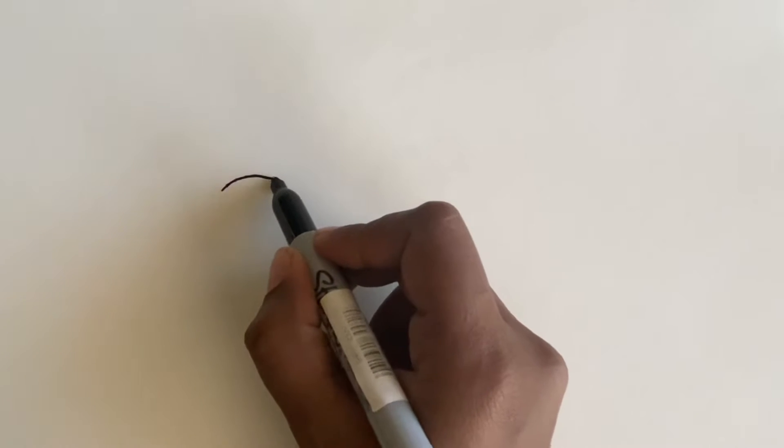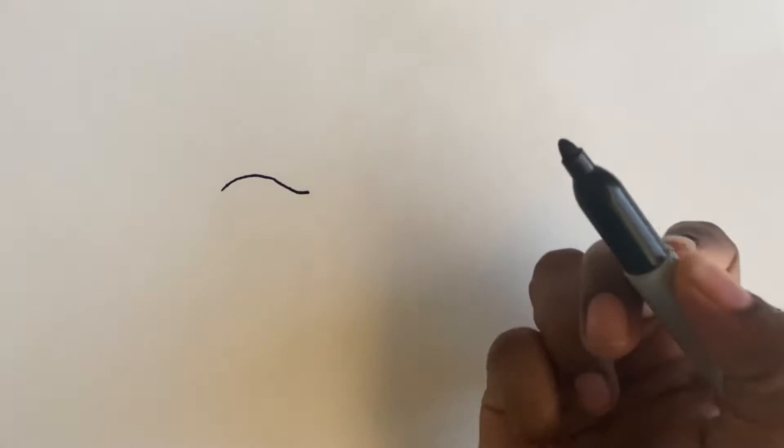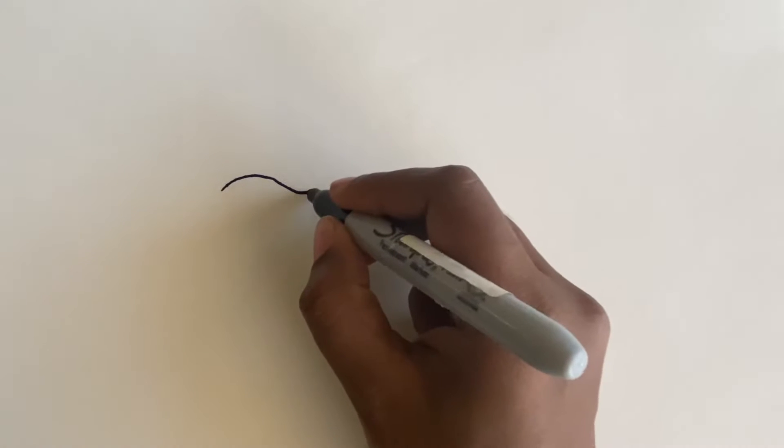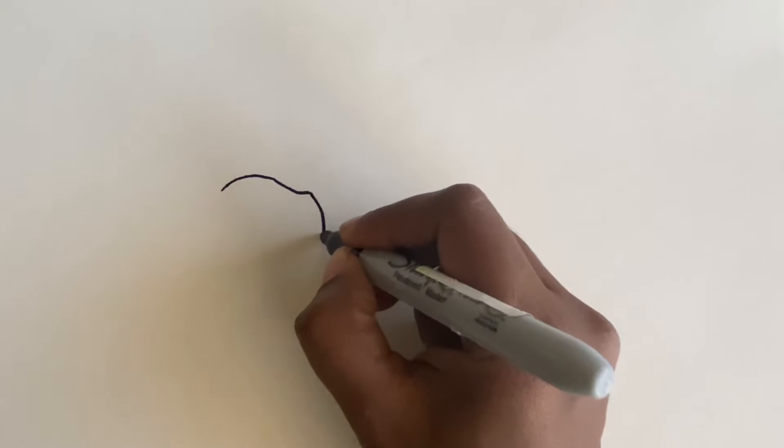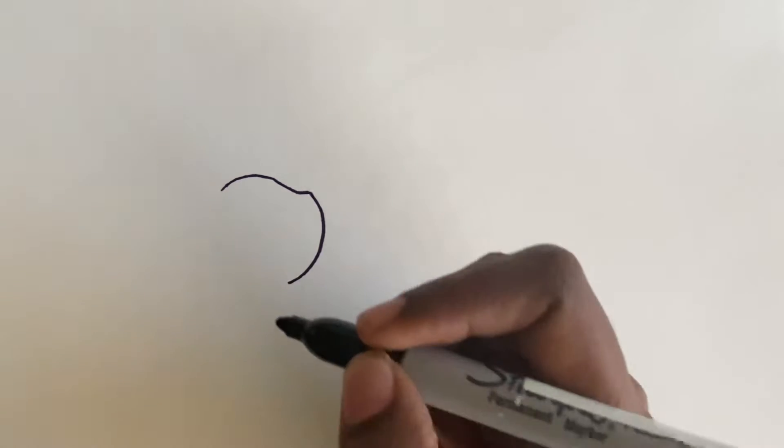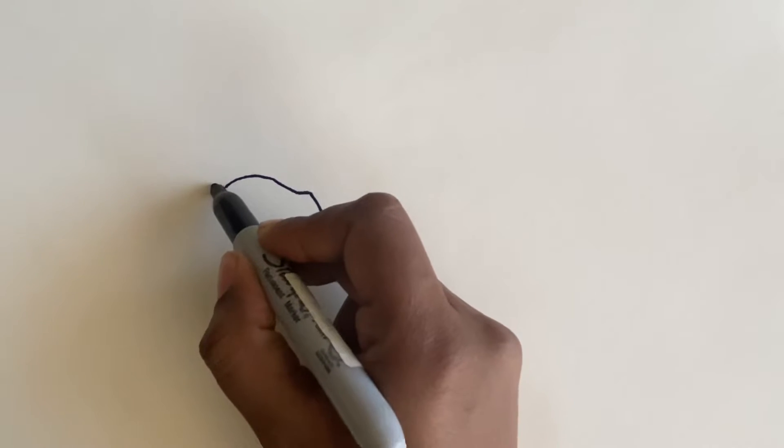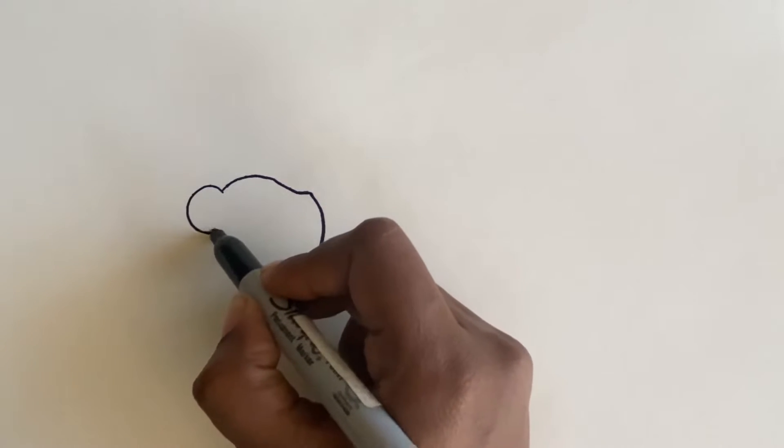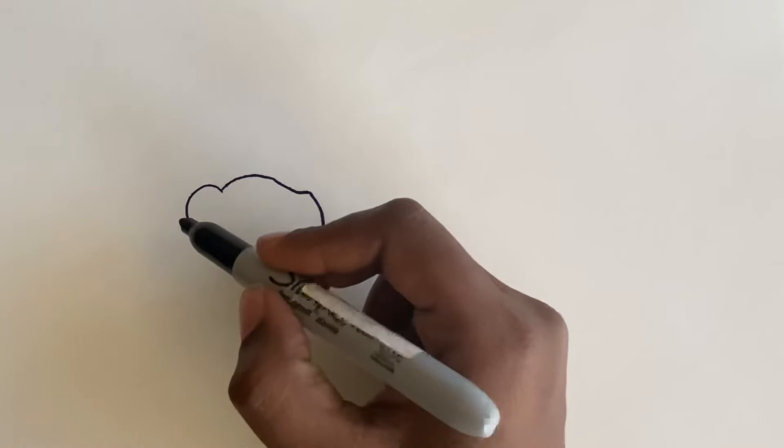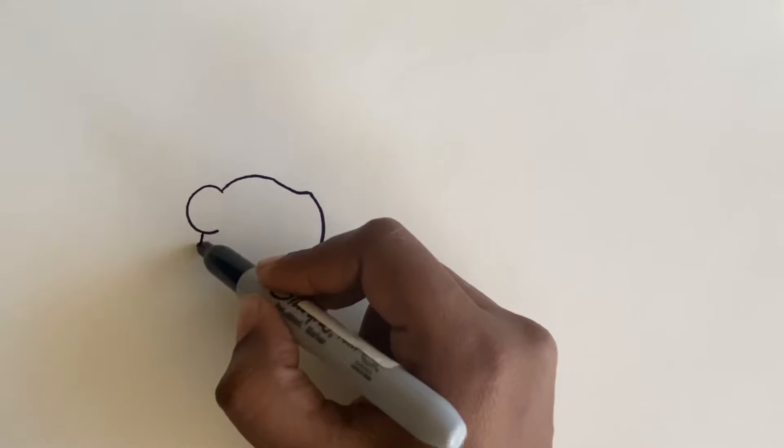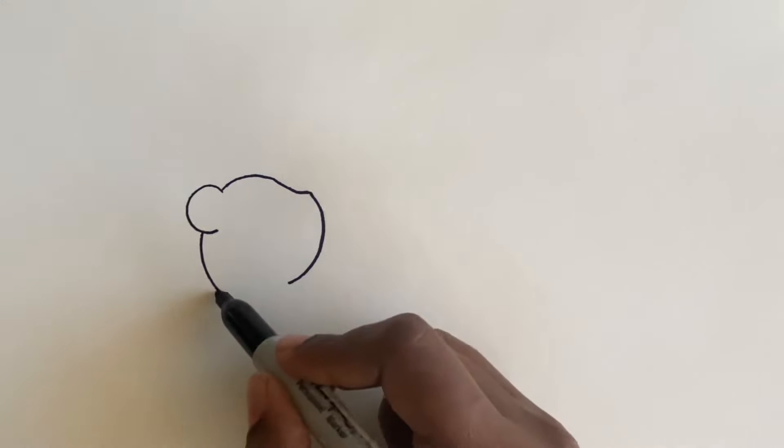Let's start making his head in the middle of the page. Make a curve, a pointy nose. Good. And then a C for the ear. Now another curve from the top to the bottom. Now join the two bottom lines.